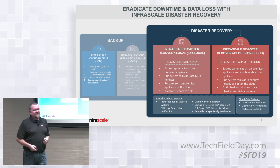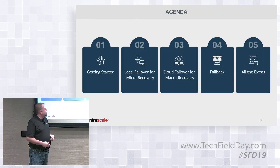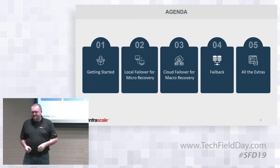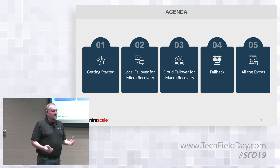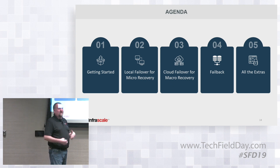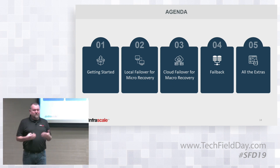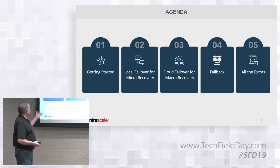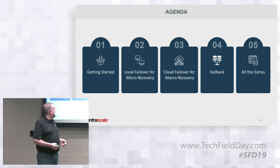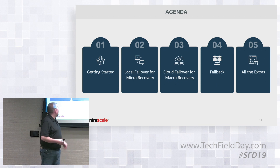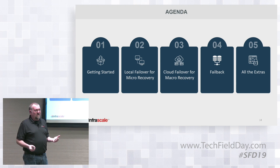Here's our agenda: we're going to start with getting started — how we set this up, ship out the appliance to a customer, configure the first backup. When we back up a machine we call it a client. We'll talk about what the appliance is — we grab all the local data, push it to the appliance, and replicate out to the cloud. Then we'll demo local failover: what it looks like to boot stuff up on the local appliance for a micro disaster.